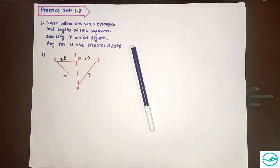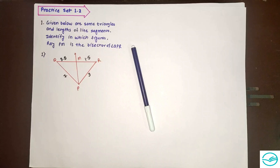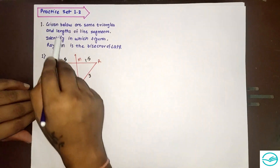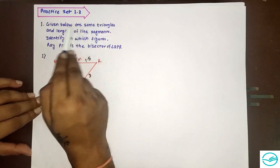Guys, I have already started with similarity questions and theorems. We have finished some theorems, exercise 1.1 in the last lecture, where I covered the angle bisector property, parallel lines property, and the application of basic proportionality theorem. Now we are on exercise 1.2, practice set 1.2.